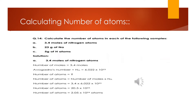Now let us calculate the number of atoms. We are going to understand this with the help of an example: how to calculate the number of atoms in each of the following. Part A is 3.4 moles of nitrogen atoms. For finding the number of atoms when the number of moles are given, the formula is the same as used for finding the number of molecules — that is, number of atoms = number of moles × Avogadro's number.